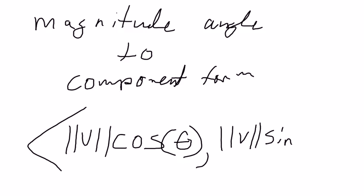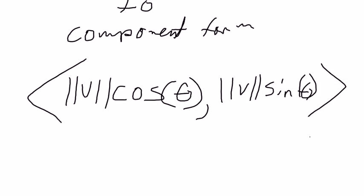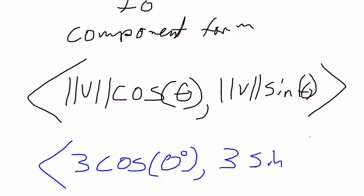So how do we do that with number 67? Well, the magnitude for number 67 is 3, and then it would be cosine of the angle of 0 degrees, comma, the magnitude of 3 times the sine of 0 degrees.